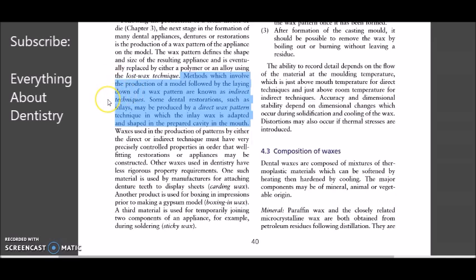On your screens you can see the highlighted part — this screenshot is from Applied Dental Materials by John McCabe, ninth edition, chapter number four: Waxes. This line says: 'Methods which involve the production of a model followed by laying down of a wax pattern are known as indirect techniques. Some dental restorations such as inlays may be produced by a direct wax pattern technique, in which the inlay wax is adapted and shaped in the prepared cavity in the mouth.'